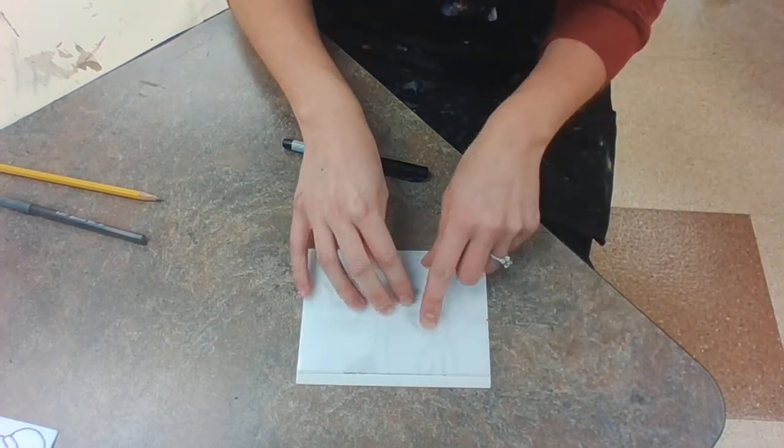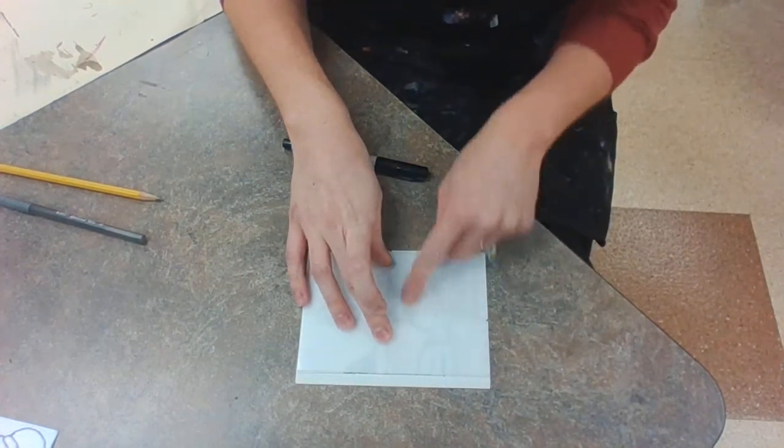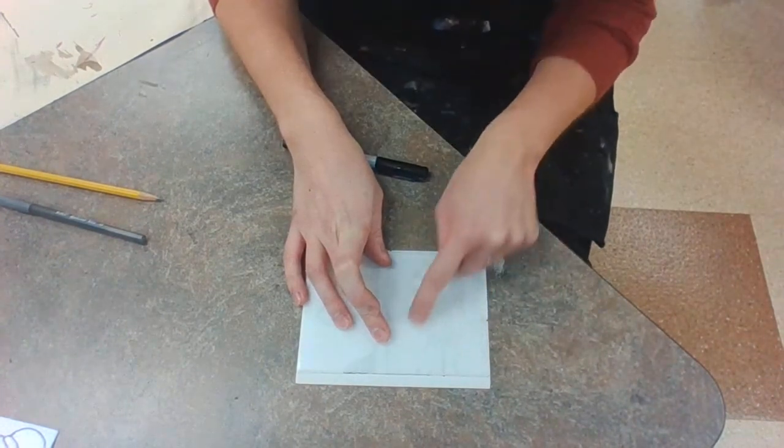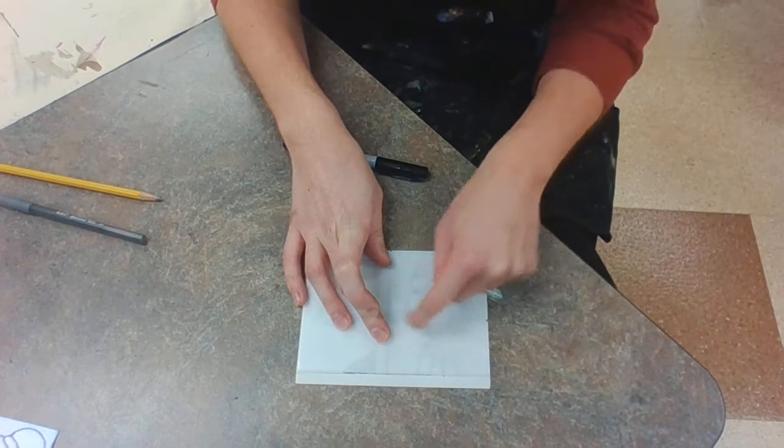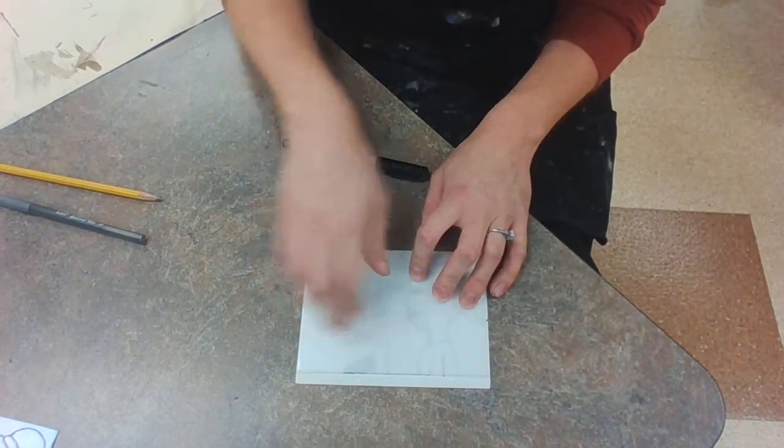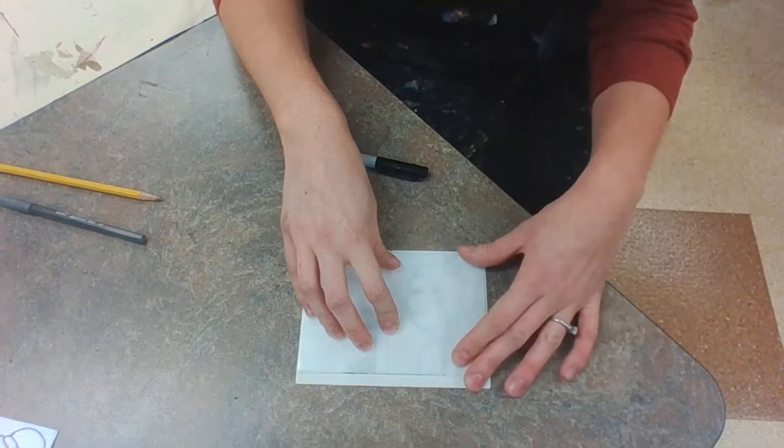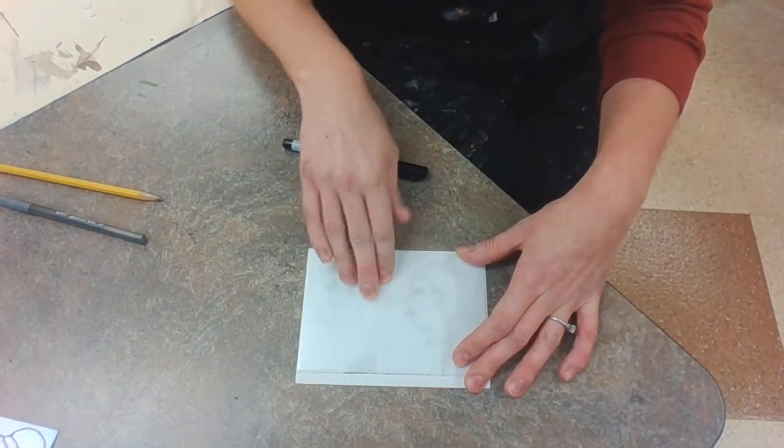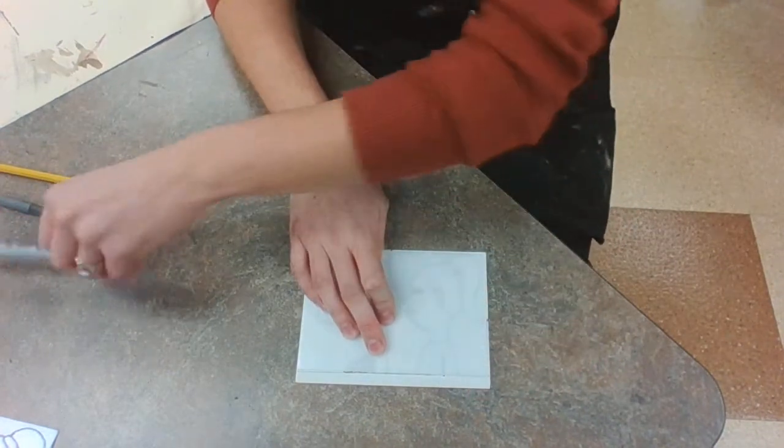From here I can see my sharpie lines right through my plate. You might not be able to, but I can see my sharpie lines right through. I want to make sure I put my plate right on top the way I want it. If I'm having trouble seeing any of my lines, then I need to go to the light table.